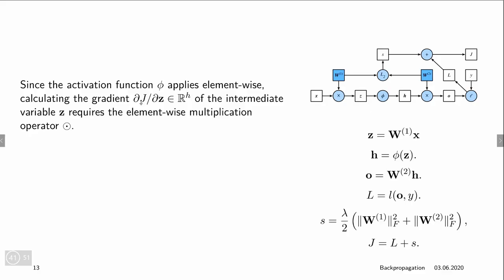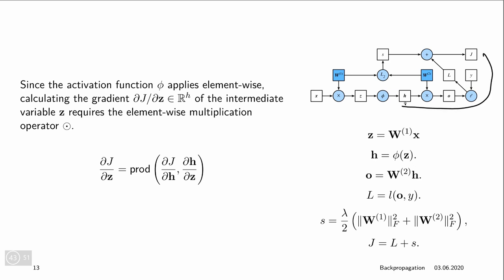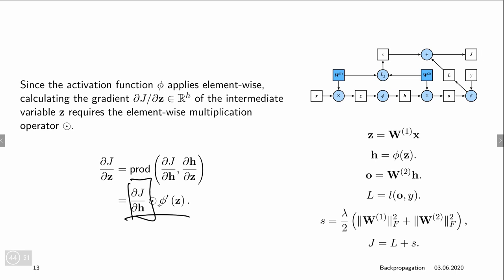Since the activation function phi is an element-wise operation, computing D_J/D_Z uses element-wise operations. Applying the chain rule, D_J/D_Z equals D_J/D_H — already computed — Hadamard-multiplied with the derivative of the nonlinearity phi evaluated at Z. So we take phi-prime of Z element-wise and multiply it with D_J/D_H.